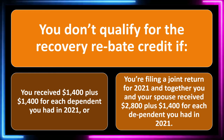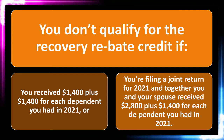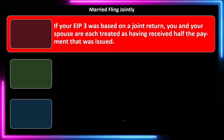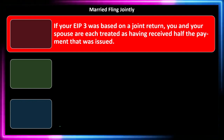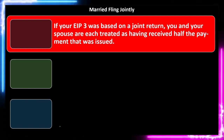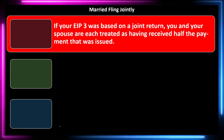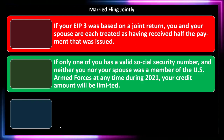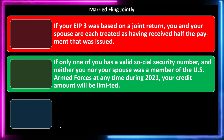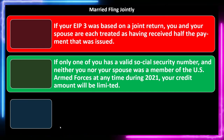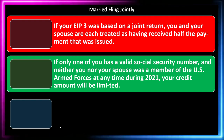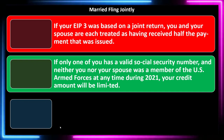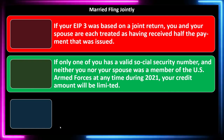If you're filing a joint return for 2021, together you and your spouse would have received $2,800 plus $1,400 for each dependent in 2021. If your EIP3 was based on a joint return, you and your spouse are each treated as having received half the payment issued. You might think of it as the IRS sending the payment per social security number — per person — rather than one amount per return.